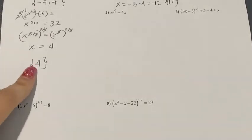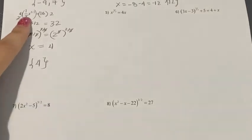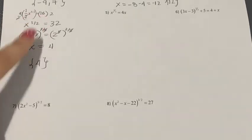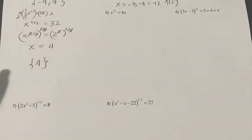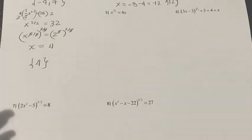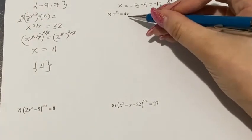You might ask why there's no plus or minus four. If you plug in negative four, you get negative four to the power of five, and taking the square root of a negative number is non-real. So negative four is not a solution. Always go back to basics: plug the negative value into the original equation to confirm it doesn't work.